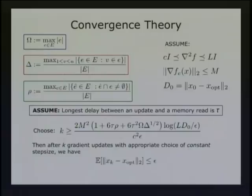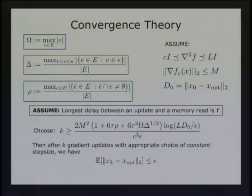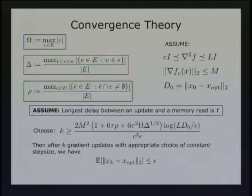The convergence theory says: to converge to a tolerance epsilon, the key insight is that if delta and rho are zero — if the graph is completely disconnected — the rate you get is m squared over c squared over epsilon, which is exactly the rate you get in the serial case. If they're not zero but just a little bit bigger than zero, we're still getting a speed-up because this is the total number of updates but we have p processors running at the same time, so we can make the updates p times faster. Essentially we get a linear speed-up, and it turns out it's even better in practice than theory predicts.